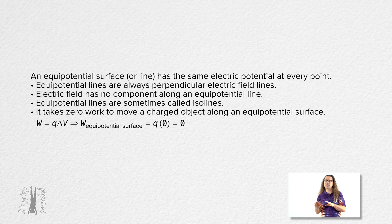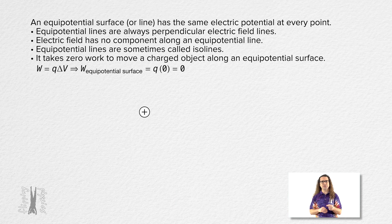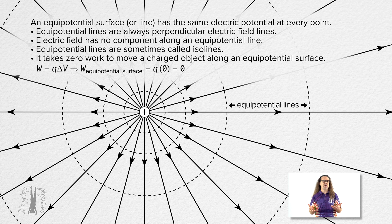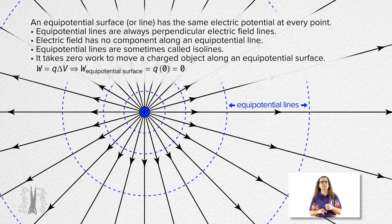Let's switch our example now to a positive point charge. In a previous lesson, we determined the electric field — it looks like this. Given what we know about equipotential lines, we know the equipotential lines around a positive point charge look like this. Let's make all of those equipotential lines blue, because that is what we did last time for the electric field for a positive charge. Notice how all the equipotential lines are perpendicular to the electric field lines.